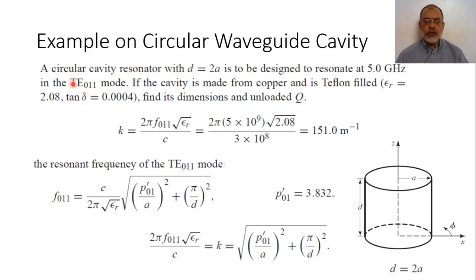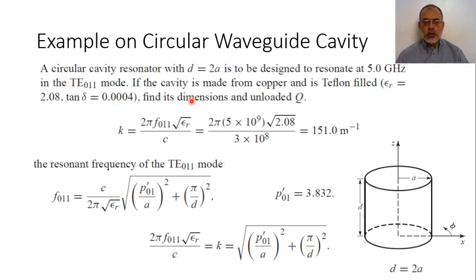It should be noted that TE011 is not the dominant mode — the dominant mode is either TE111 or TM010. The cavity is made from copper, and is Teflon-filled, so the relative permittivity inside the cavity is εr = 2.08 and loss tangent tan δ = 0.0004. We need to find its dimensions such that it resonates at 5 gigahertz in TE011 mode, and find the unloaded quality factor including both conductor and dielectric loss.